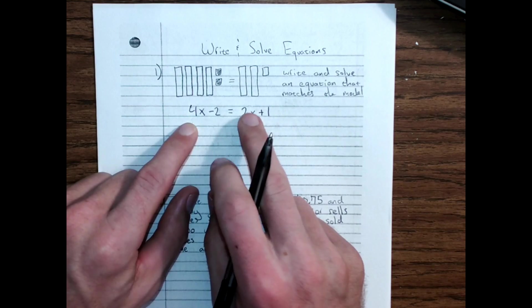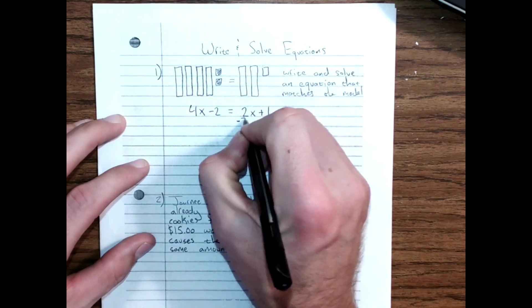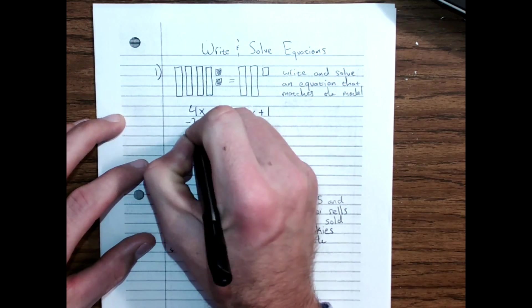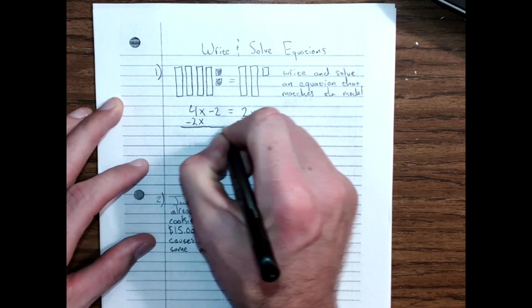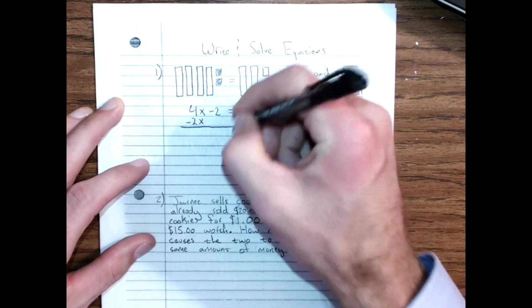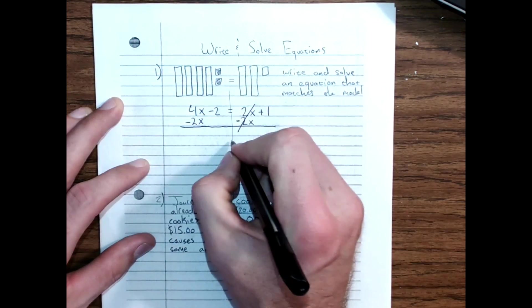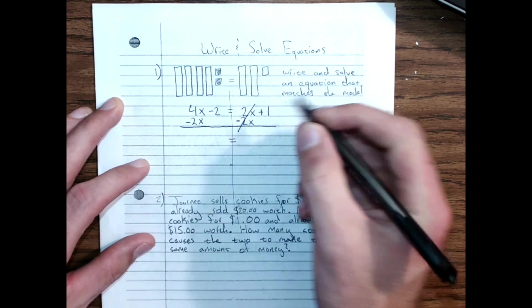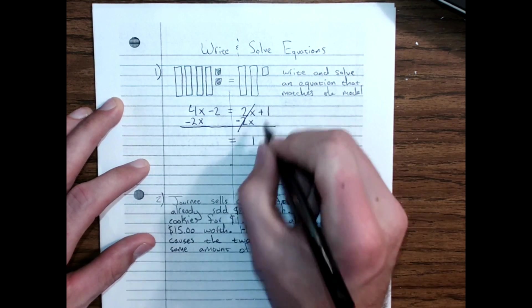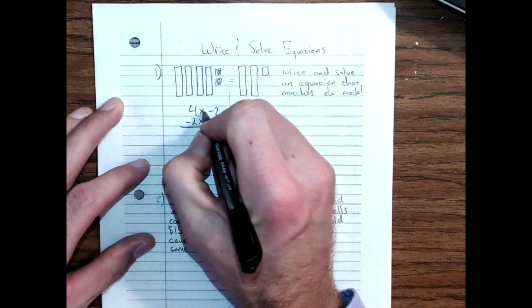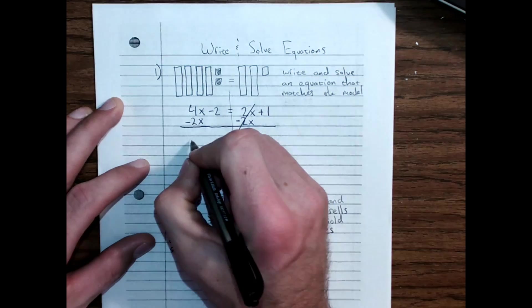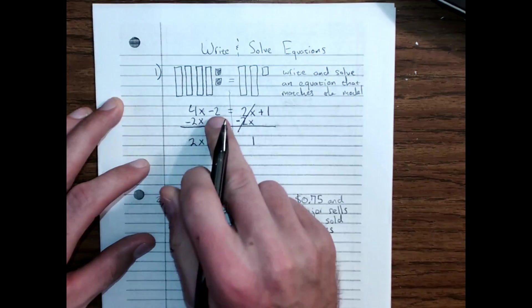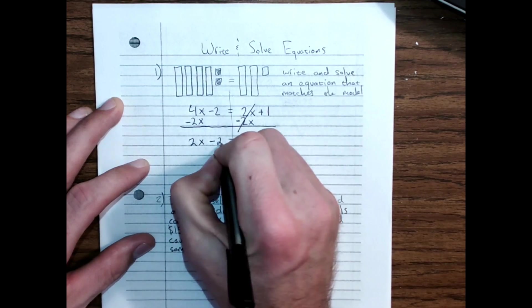Start with the smaller of the x terms first, subtract 2x from both sides, makes a zero pair here. Be sure you bring your equals sign straight down. All I've got left over here is a plus 1, 4x boxes minus 2x boxes is 2x boxes, and I have a minus 2 that I need to rewrite.